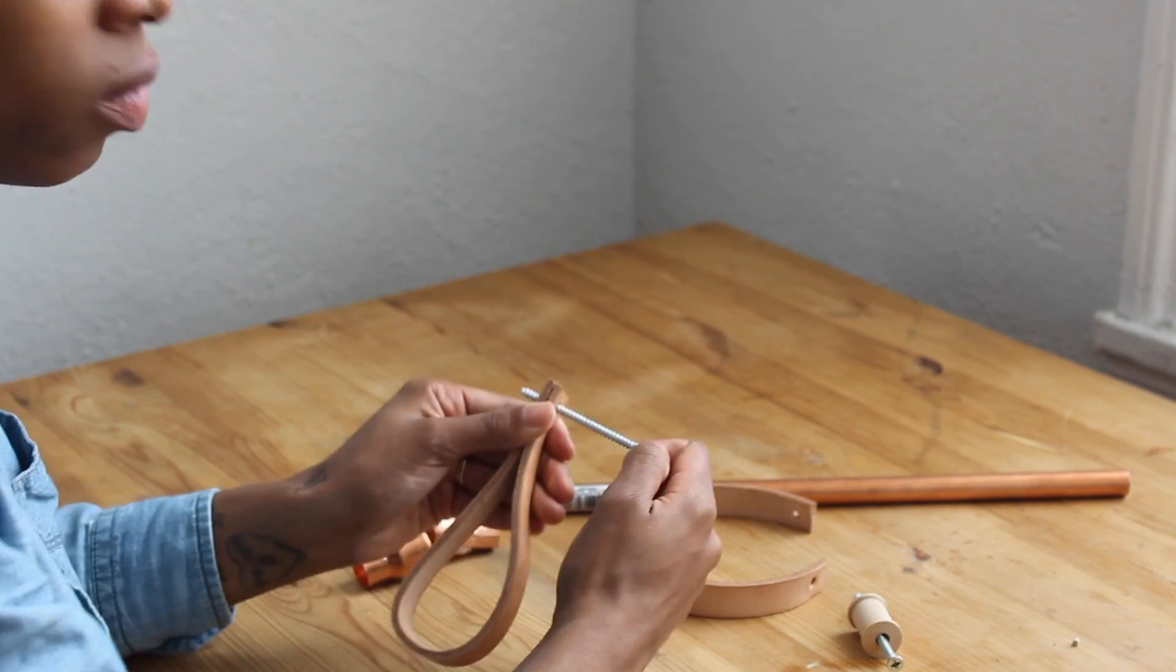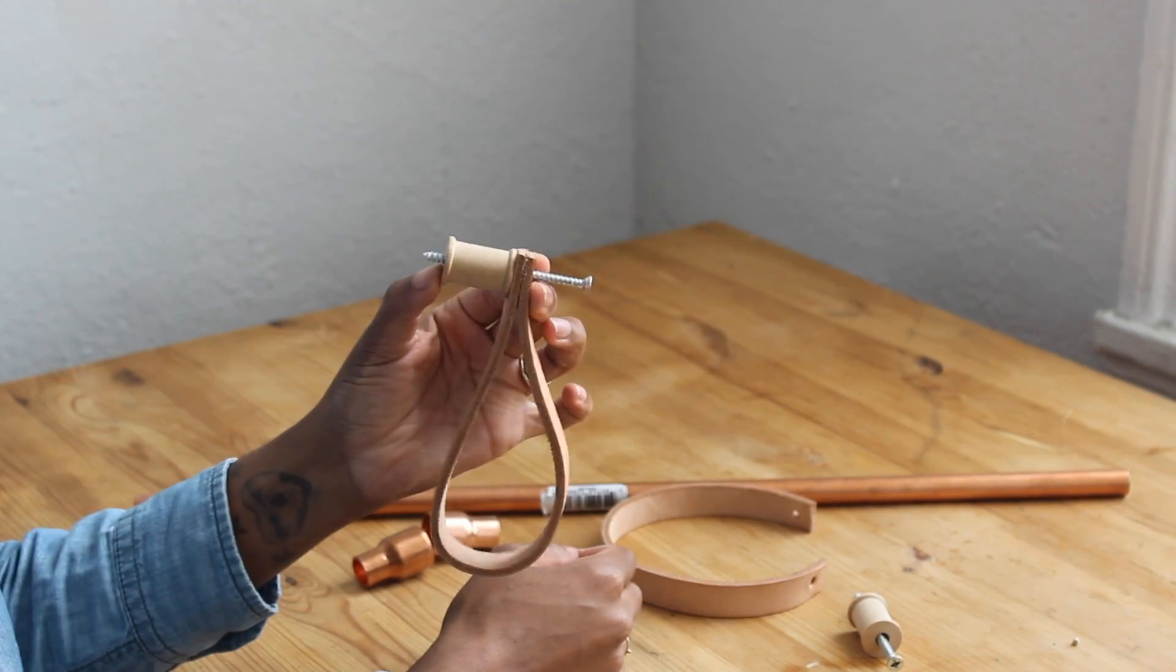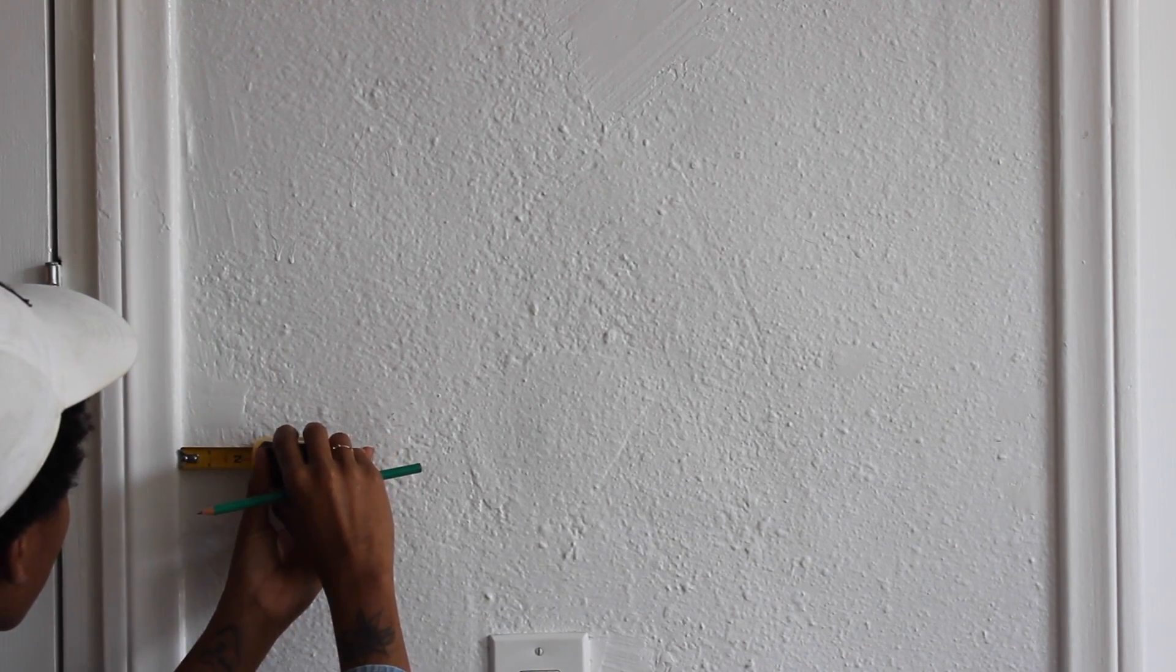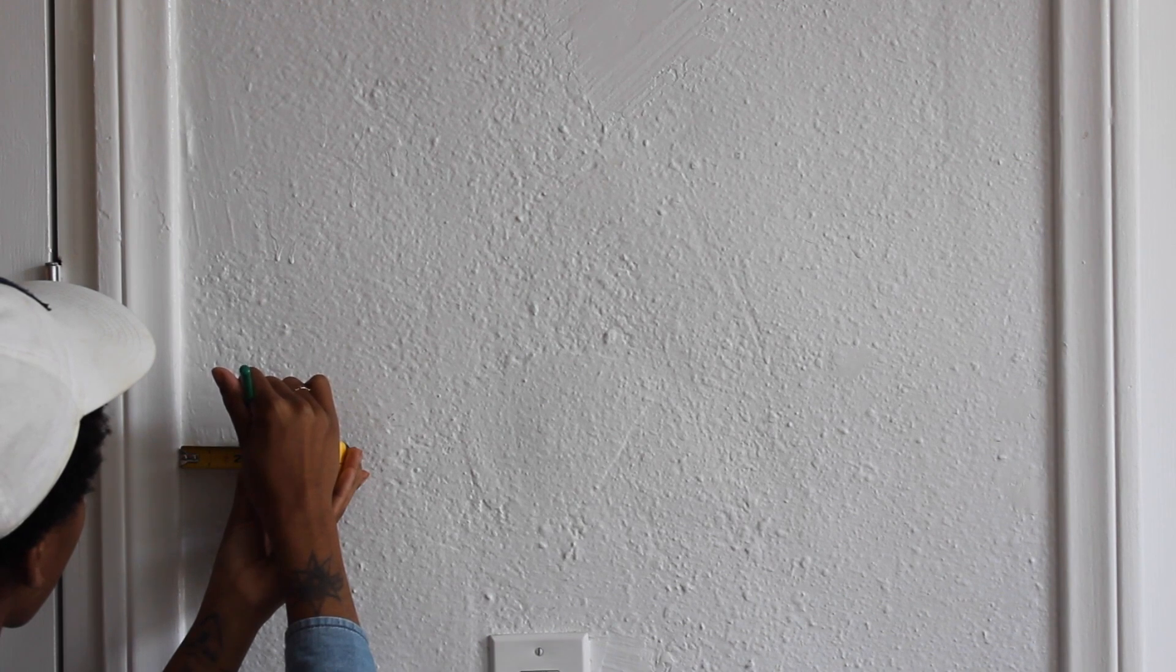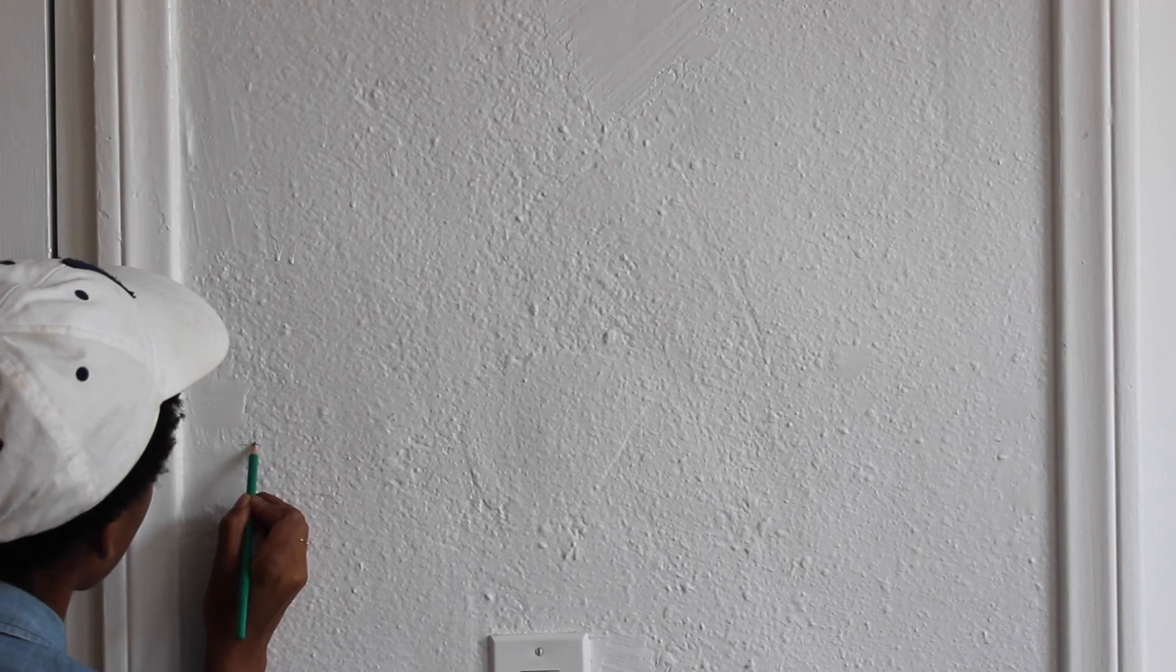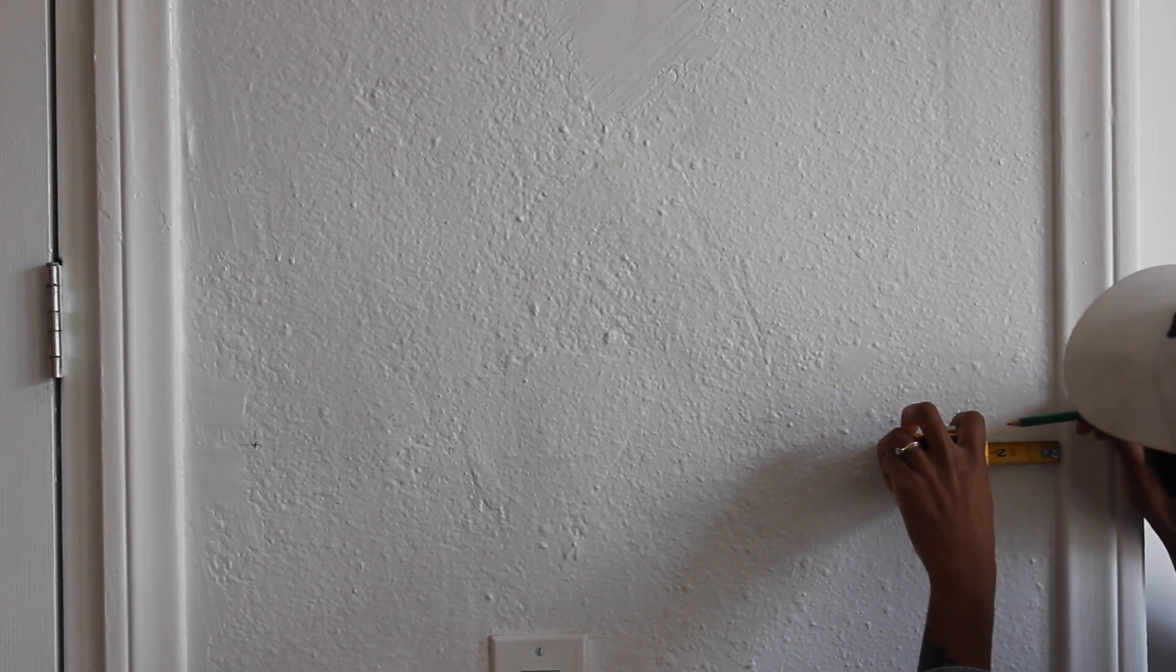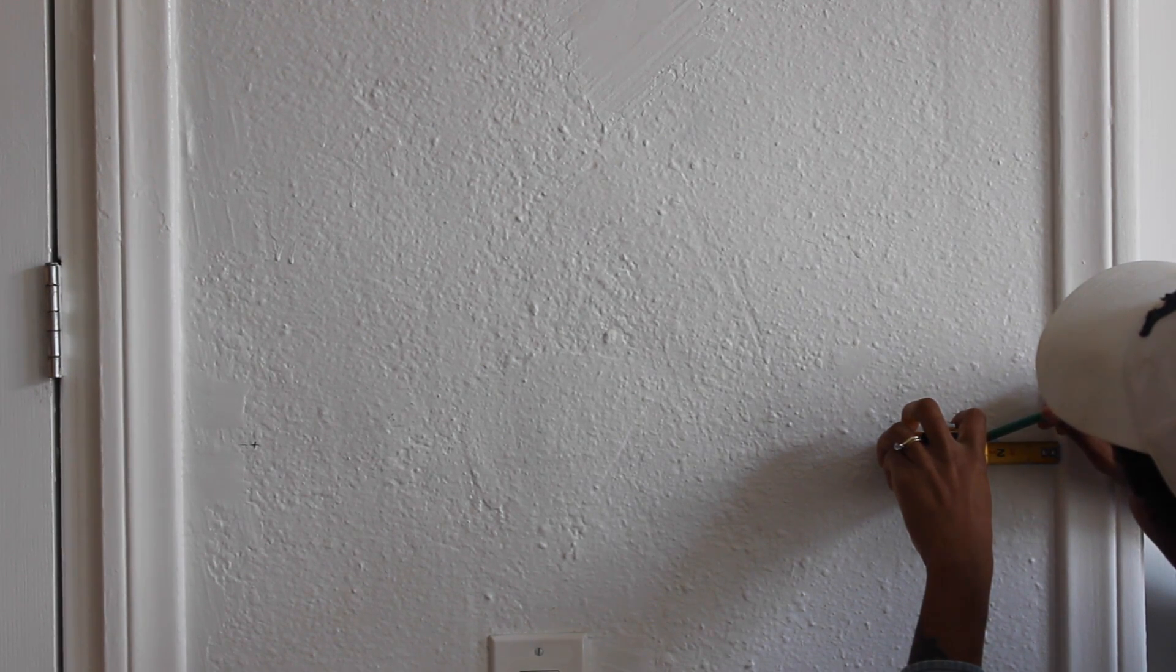So now I'm just measuring where to put the clothing rod on the wall. So the clothing rod itself with the end caps measures about 25 inches. This space in between the molding on my wall is 28, so I know I have five inches to work with. So I know that I need to measure two and a half inches off of each side, and I decided that it should be at a height of 60 inches tall. So now I'm just marking that on the walls on both sides.